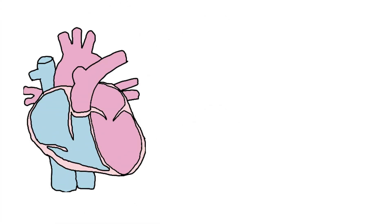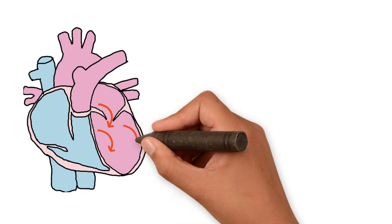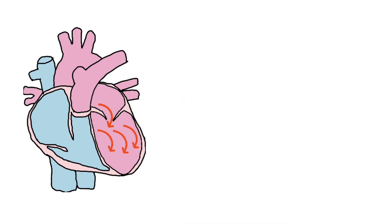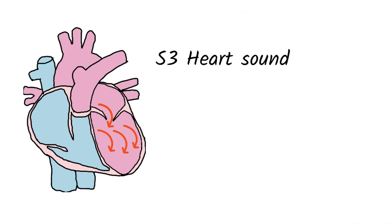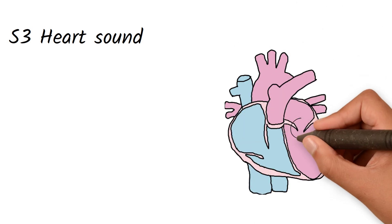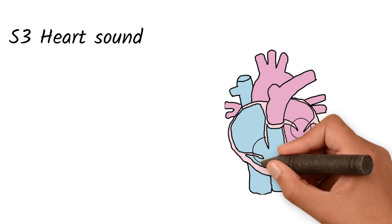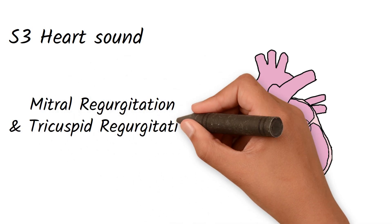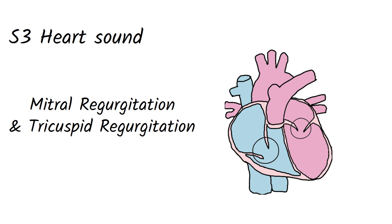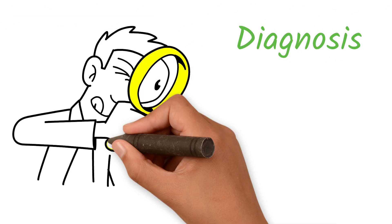In dilated cardiomyopathy, due to the increased diameter, more blood will fill the ventricles during diastole, and the turbulence caused by this large volume of blood will result in an S3 heart sound. Also, when the chambers are dilated it will pull apart the leaflets of the mitral and tricuspid valves, so there will be mitral and tricuspid regurgitation murmurs as well.